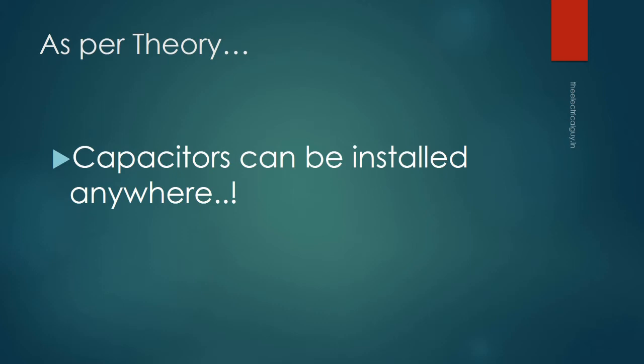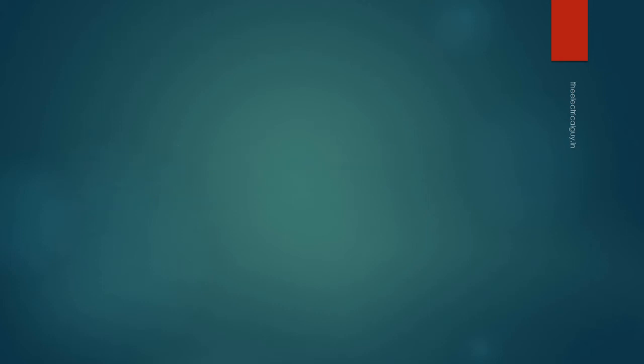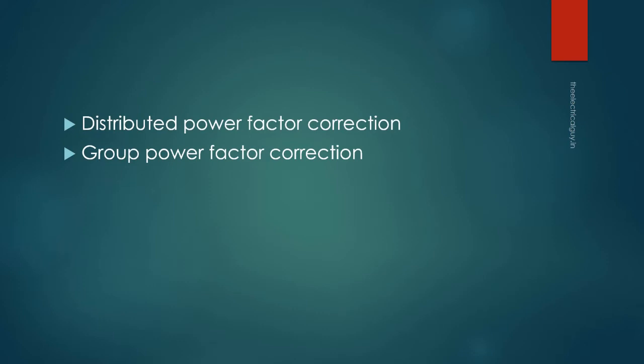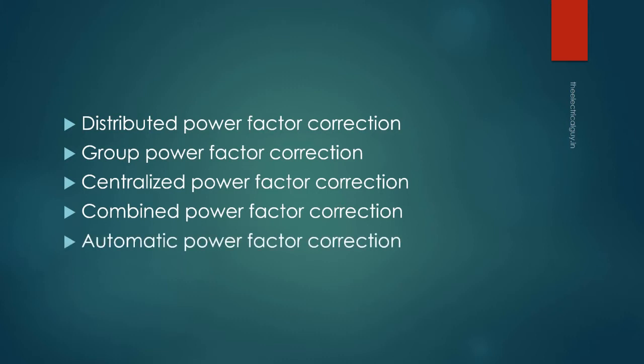These are the types of power factor correction: number one, distributed power factor correction; number two, group power factor correction; number three, centralized power factor correction; number four, combined power factor correction; and number five, automatic power factor correction.